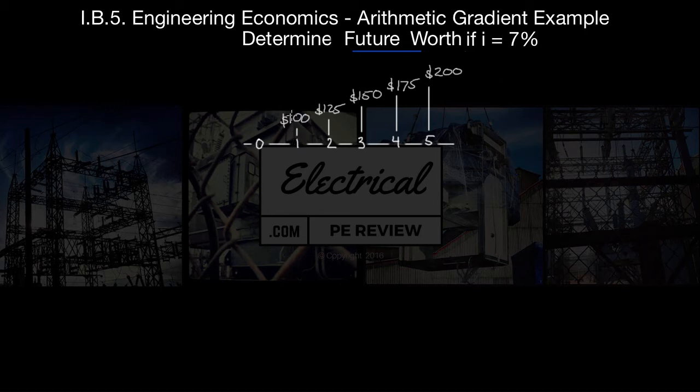Notice on period 1, we have a value of $100. If this was a true gradient-only cash flow diagram, we would have nothing at period n equals 0. So, how do we do this? How do we approach this problem?